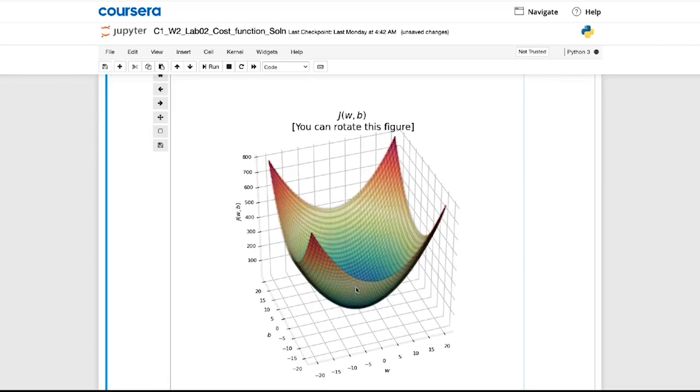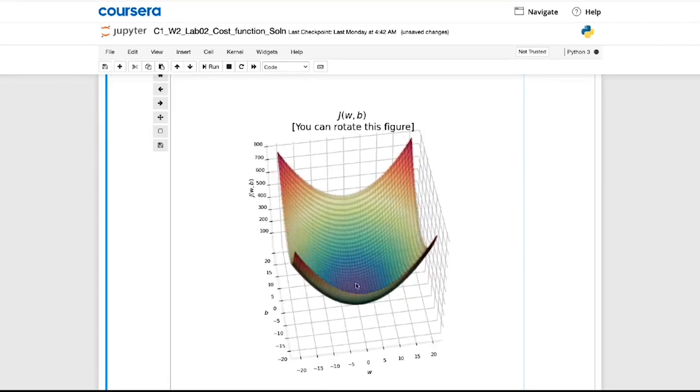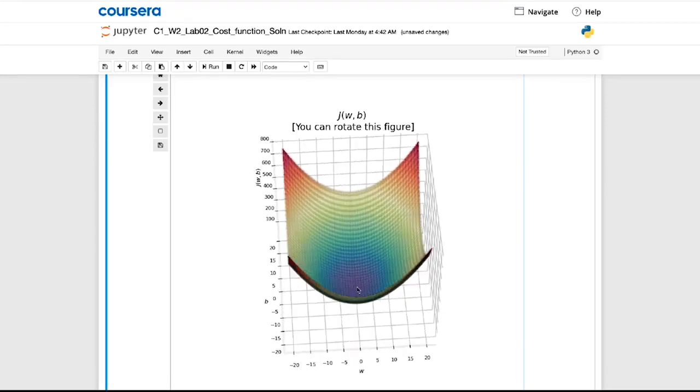Finally, the optional lab also has a 3D surface plot that you can manually rotate and spin around using your mouse cursor to take a better look at what the cost function looks like. I hope you enjoy playing with the optional lab.